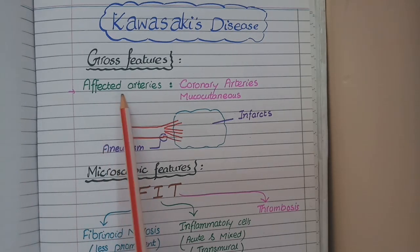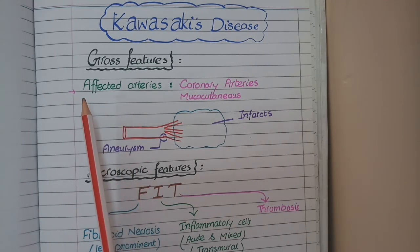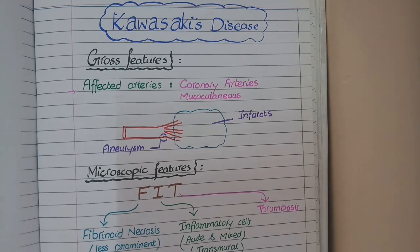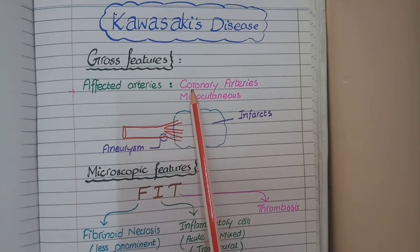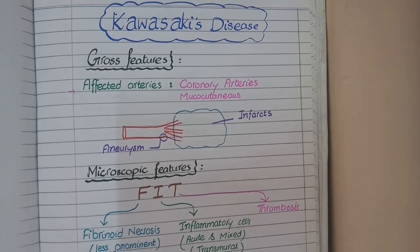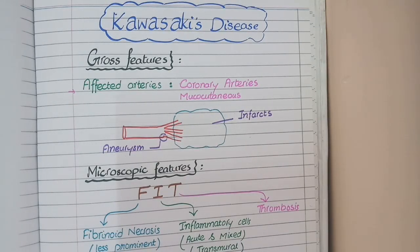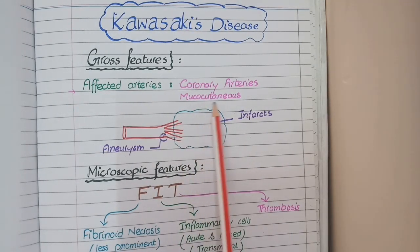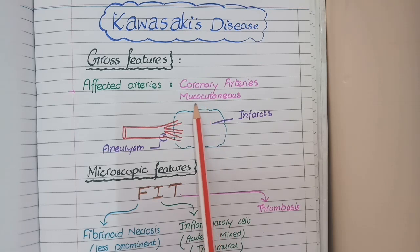The second type of medium vessel vasculitis is Kawasaki's disease, which is almost similar to polyarteritis nodosa. The only difference is the site of affected vessels. In polyarteritis nodosa, the most commonly involved arteries are renal arteries followed by coronary arteries. But in Kawasaki's disease, renal arteries are not affected; the most affected arteries are the coronary arteries. Since Kawasaki's disease usually affects children, it presents as myocardial infarction in young children, which is a very surprising feature. The second most commonly involved arteries are the mucocutaneous arteries, supplying the mucous membranes and skin.